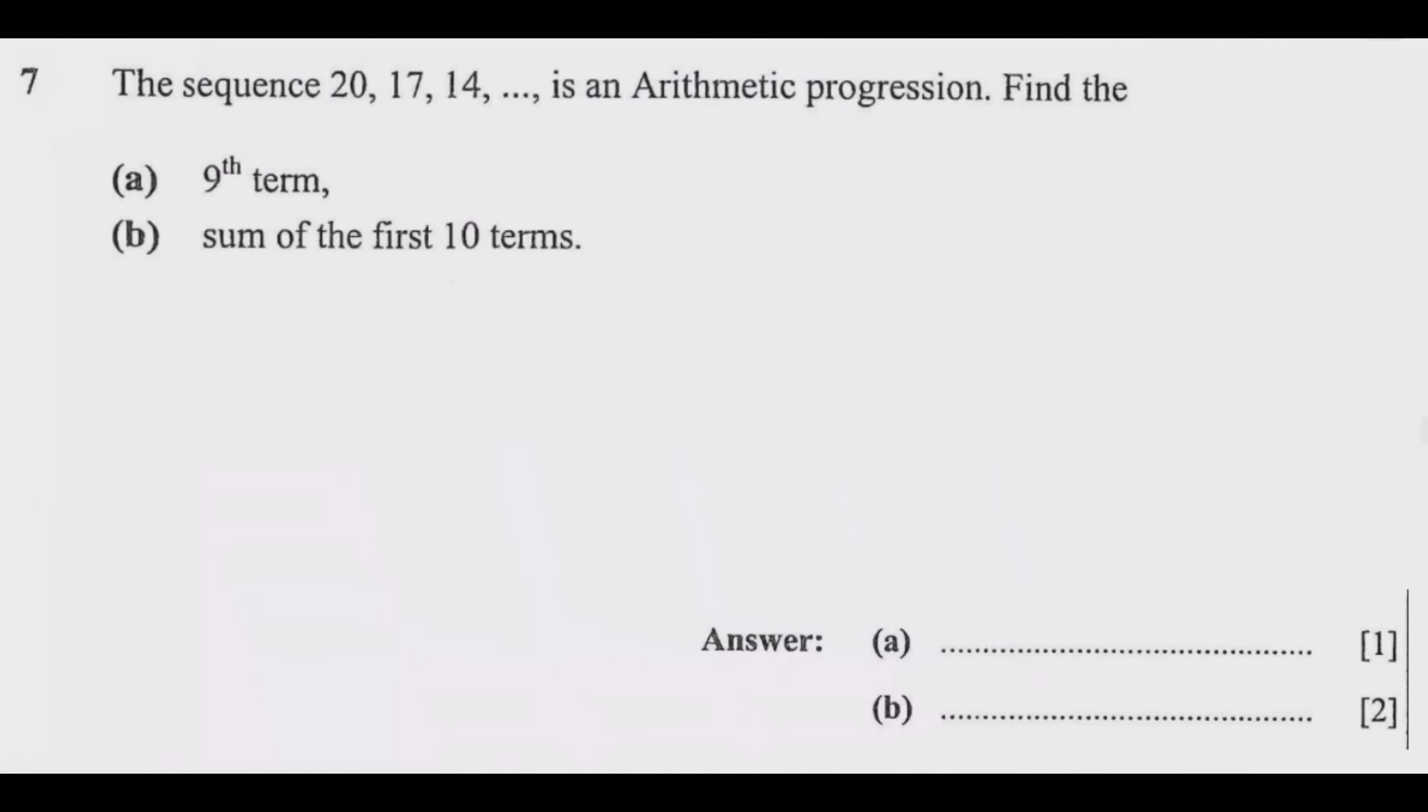We look at question 7. The sequence 20, 17, 14, dot dot dot is an arithmetic progression. Find (a) the ninth term, (b) the sum of the first ten terms.